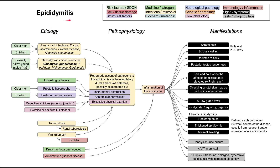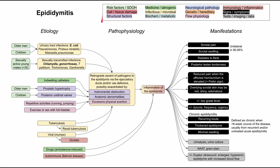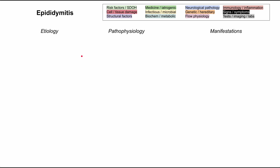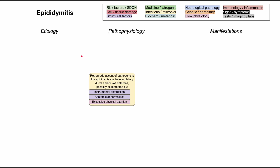This is a mechanism of disease map for epididymitis. I'll be talking about the etiology, the pathophysiology, and the manifestations of epididymitis. As in all of these flowcharts, each of the boxes is color-coded according to the legend in the top right. I'll be clearing all of these boxes and talking about them one by one as we repopulate the flowchart.